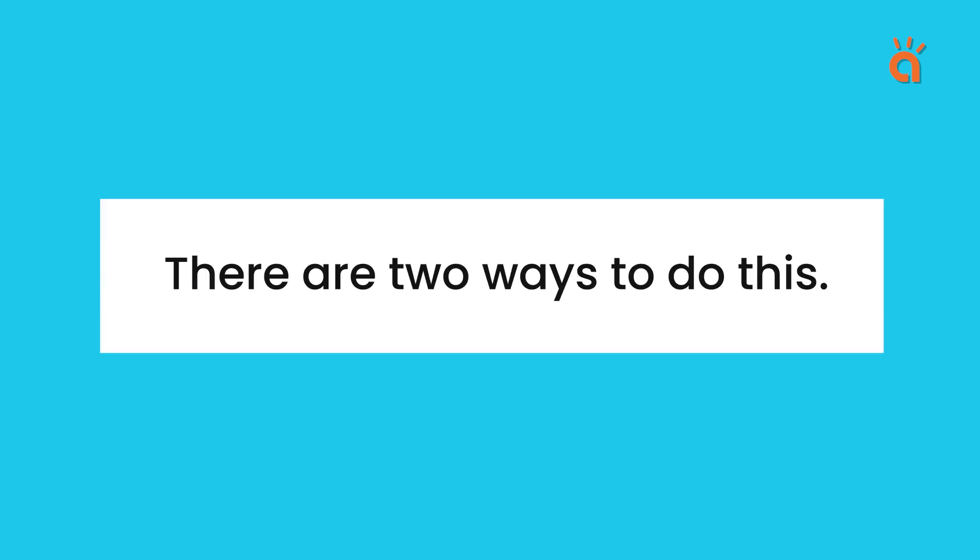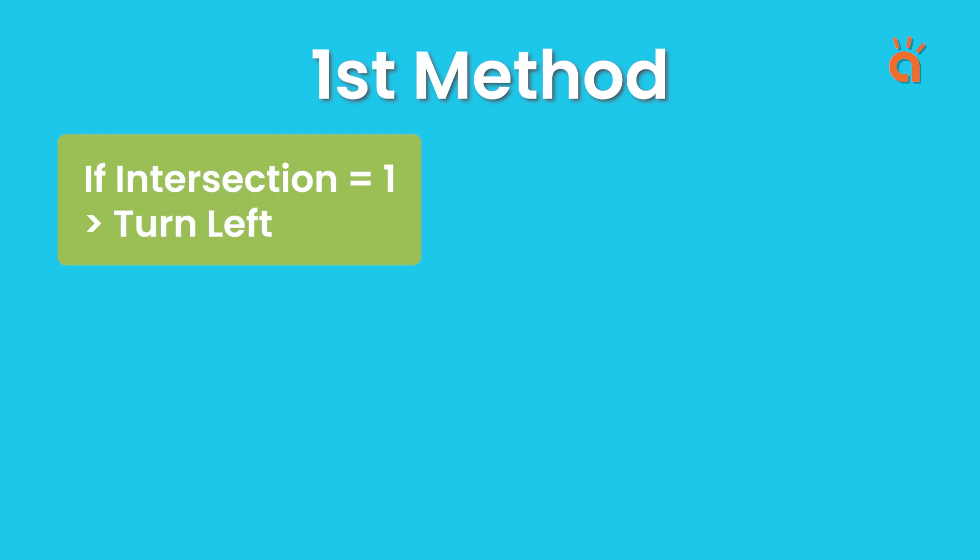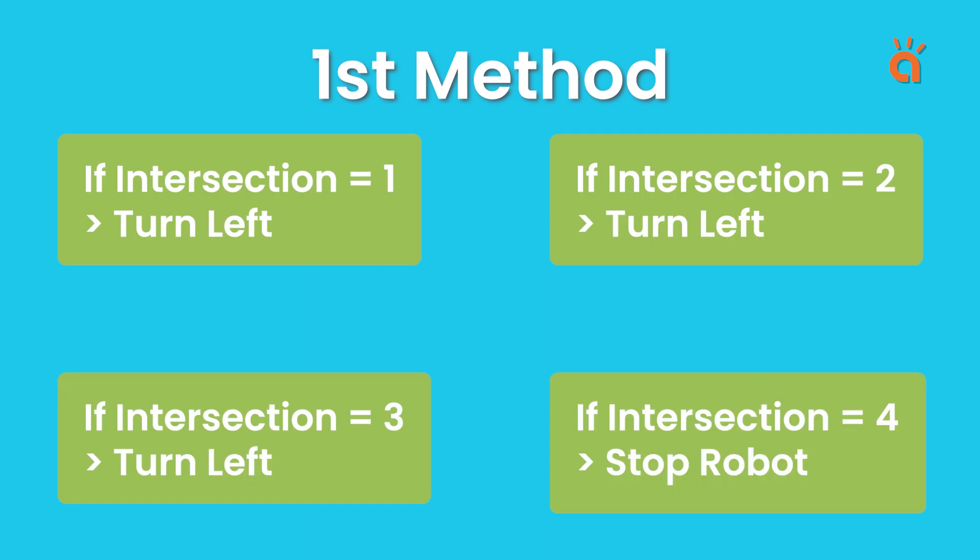There are two ways to do this. First is to create four separate if-else conditions. This is a good way to code and the robot will work with this code perfectly. But there is another way to do this. As we know that all the three conditions 1, 2 and 3 are same. We can use one single else case for them and we can use the if-case for the fourth intersection.